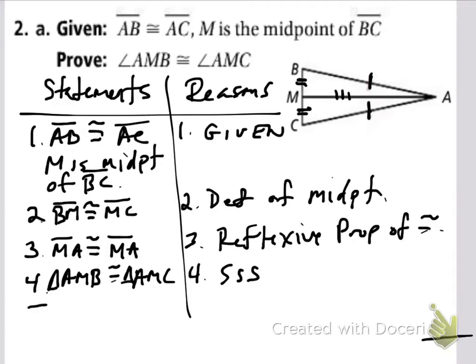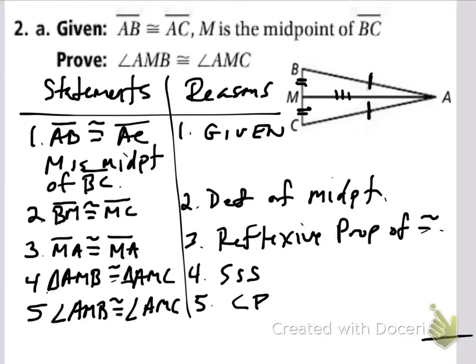Once I've proved the triangles congruent, I can say that angle AMB is congruent to angle AMC by CPCTC — corresponding parts of congruent triangles are congruent. We can clearly tell that this angle and that angle are corresponding parts. If you fold the triangles on top of each other, you should see that those angles match up. So those are the corresponding parts of these congruent triangles, and so they're congruent.